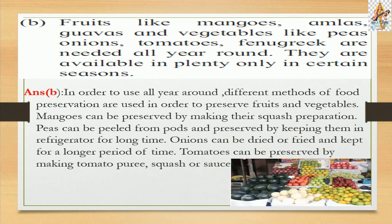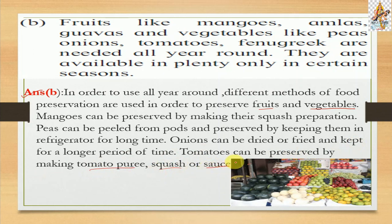Question b: Fruits like mangoes, amlas, guavas and vegetables like peas, onions, tomatoes, fenugreek are needed all year around but are available in plenty only in certain seasons. The answer is: different methods of food preservation are used to make them available all year around. Mangoes can be preserved by making squash. Peas can be preserved in a refrigerator. Onions can be dried or fried. Tomatoes can be preserved by making tomato puree, squash, or sauce.